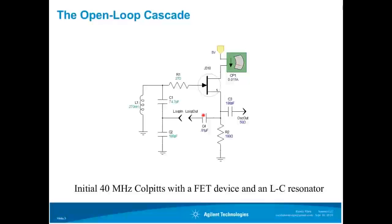I've chosen an initial loop termination resistance of 50 ohms. I could have also opened the loop at the gate. The impedance of this node is higher and a higher port resistance would need to be chosen. Resistor R2 is a bias resistor that stabilizes the quiescent drain current below the device IDSS. Common drain and common collector configurations are typically unstable at some frequency where the device has gain. Resistor R1 is often used to stabilize these amplifiers.